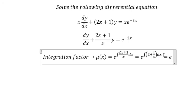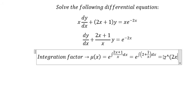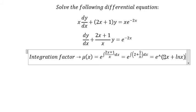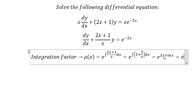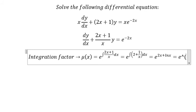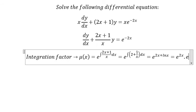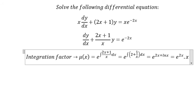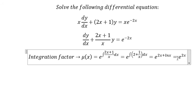So we get e^(2x + ln(x)). This equals e^(2x) times e^(ln(x)). Since e^(ln(x)) equals x, we get x times e^(2x).